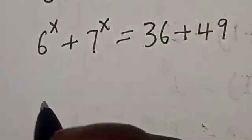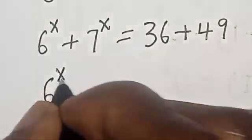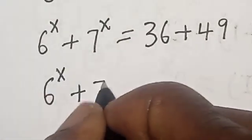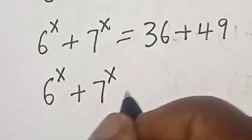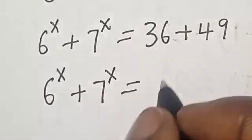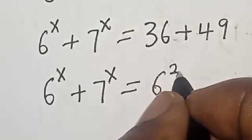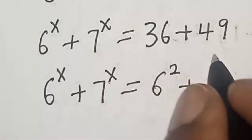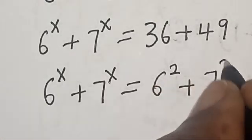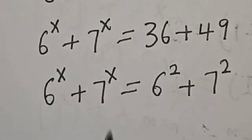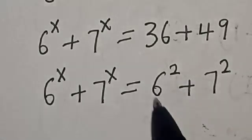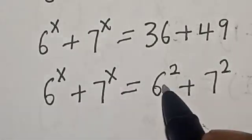Now this is 6 raised to power x plus 7 raised to power x is equal to 36, which is 6 square, plus 49, which is 7 square. Now from this equation we can see clearly that